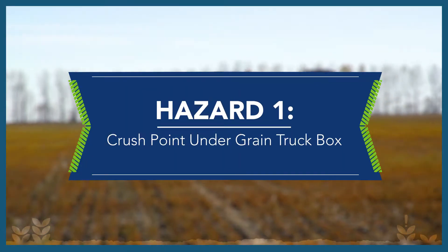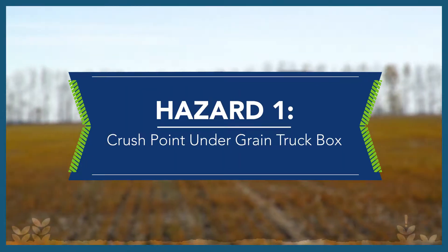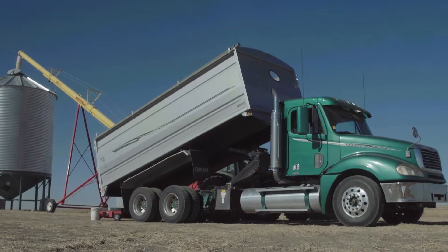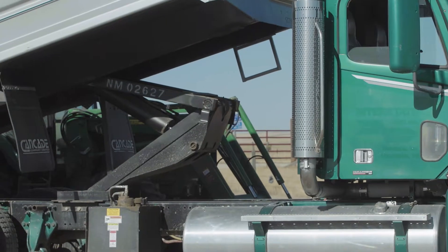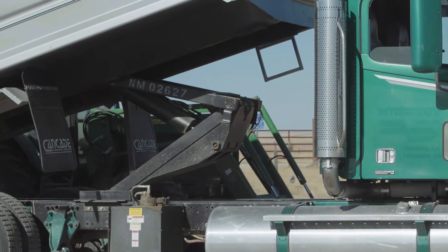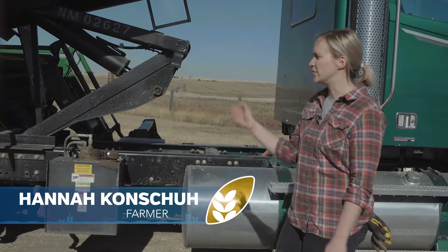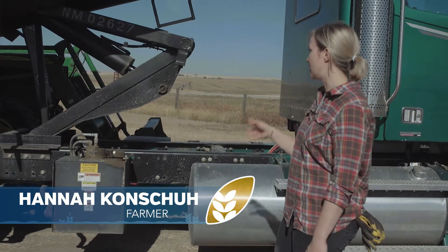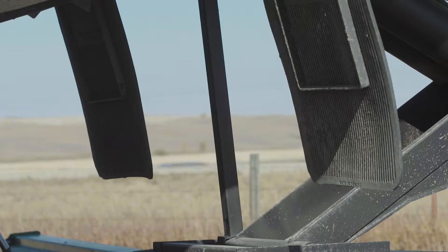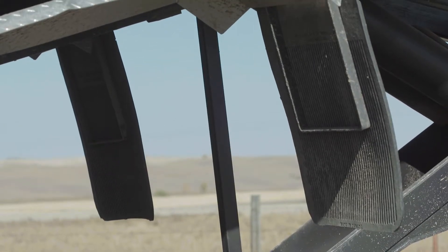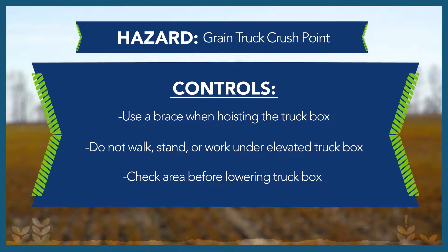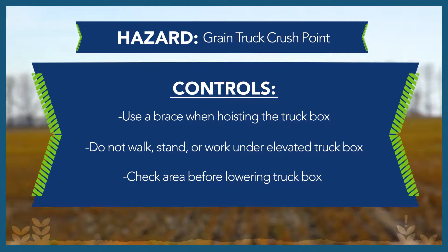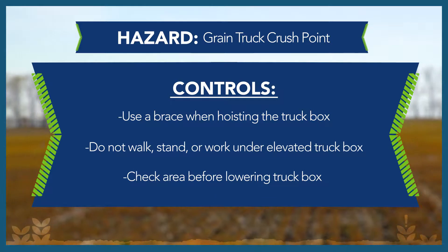Many grain trucks are equipped with hydraulic lifts that hoist the truck box up to help unload the grain. There is a very serious crush point there should you be caught under the box and the machinery fails. You wouldn't want to climb underneath this box unless it was braced up — you can see the brace right there. It's important to secure the truck box with a manual brace when hoisting it up. This prevents any incident that may occur should the hoist fail.